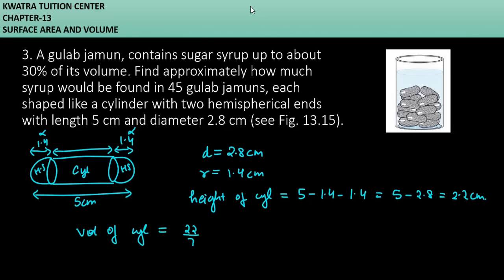π is 22/7, r², cylinder के लिए r क्या है हमारा? 1.4 का square. So 1.4 को दो बार mention करोगे, h is 2.2. Values हम reduce कर लेते हैं, जैसे 7 और 1.4 को 0.2 लिख सकते हो. बाकी सारी terms multiply कर दो. So it will give you 13.55 cm³.